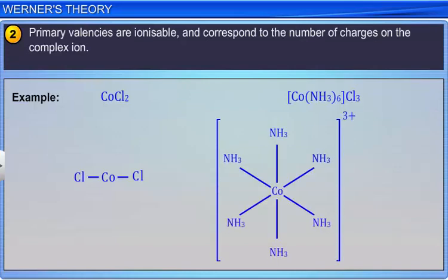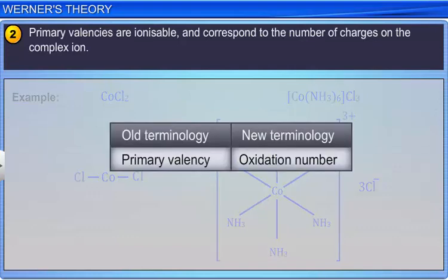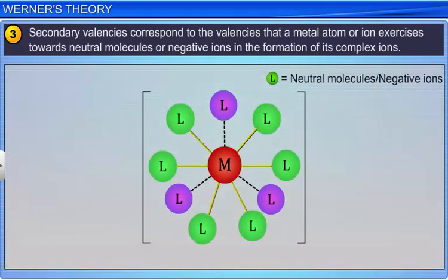The third postulate is that secondary valencies correspond to the valencies that a metal atom or ion exercises towards neutral molecules, or negative ions, in the formation of its complex ions. Every metal has a fixed number of secondary valencies, or coordination number.